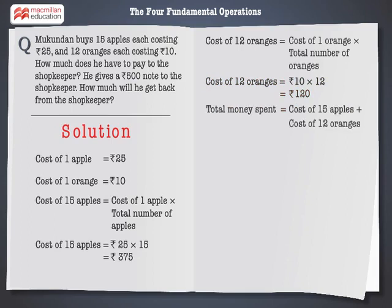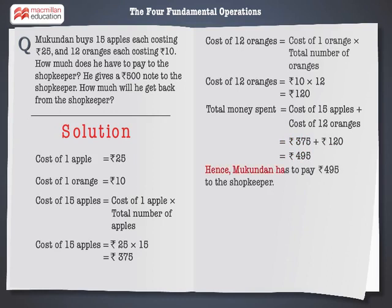Now we have to find out the total amount of money which Mukundan has spent on buying 15 apples and 12 oranges. Total money spent is equal to cost of 15 apples plus cost of 12 oranges, which is equal to rupees 375 plus rupees 120, which is equal to rupees 495. Hence, Mukundan has to pay rupees 495 to the shopkeeper.